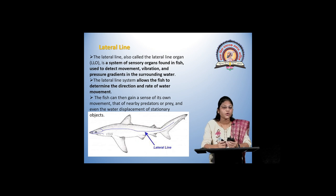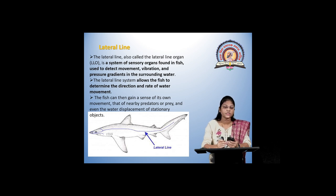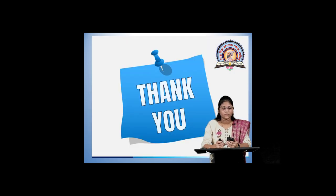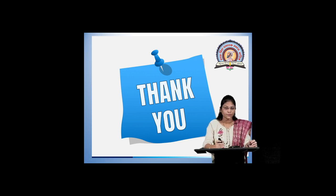The next important organ is the lateral line. It is important because it divides the fish into two parts: dorsal and ventral. The lateral line organ system (LLO) is a sensory organ found in fishes, used to detect movement, vibration, and pressure gradients in the surrounding water. This allows the fish to determine the direction and rate of water flow. With this, we have discussed all the external morphology of fishes.